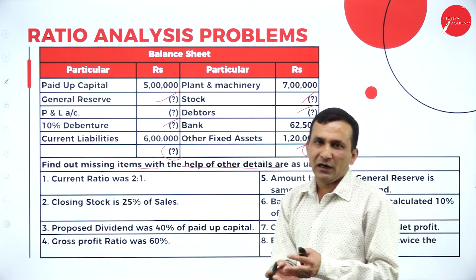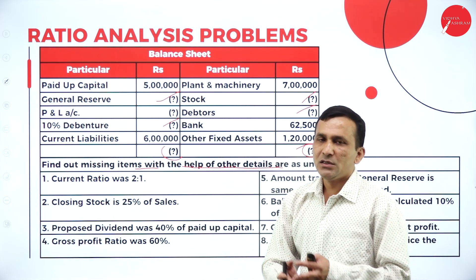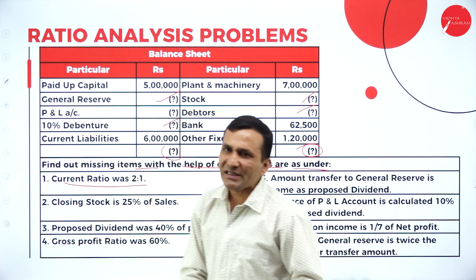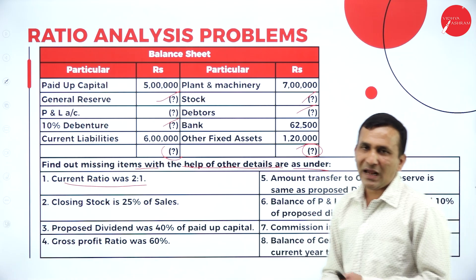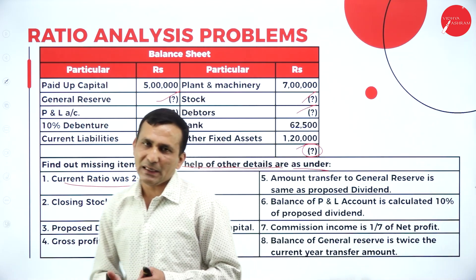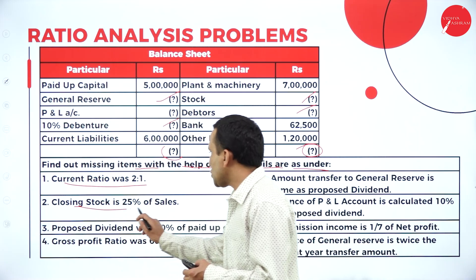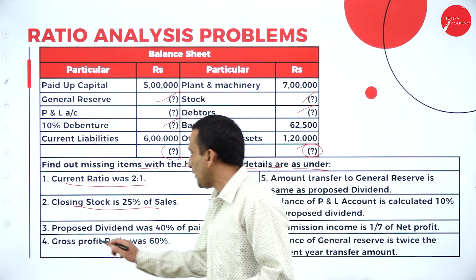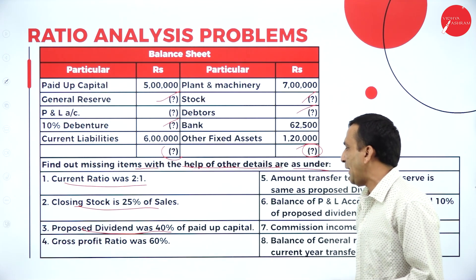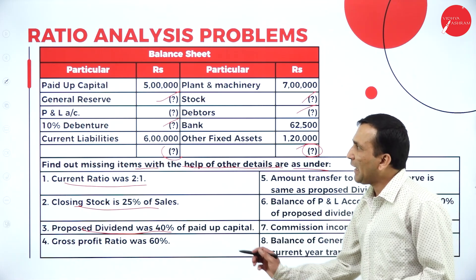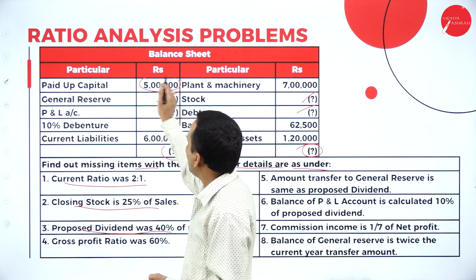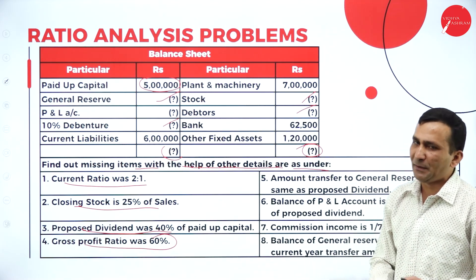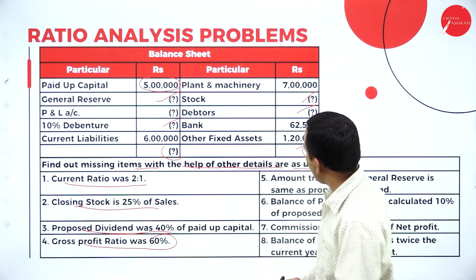We know the formulas and are trying to apply them to find the missing values. The current ratio is given as 2:1, and we know the formula: current assets divided by current liability. Closing stock is 25% of sales, and the sales value is missing so we need to find it. Proposed dividend was 40% of paid-up capital; the paid-up capital is 5 lakhs. The gross profit ratio is directly given as 60%.